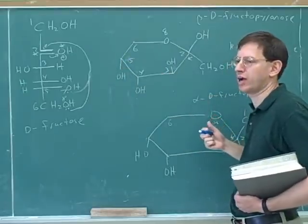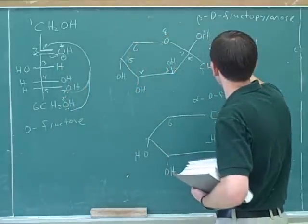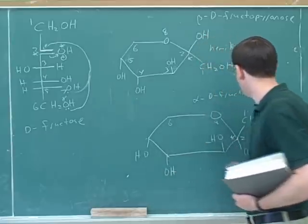You can also see it's hemi because we've only had one alcohol attack. To get the full ketone, we'd have to have two alcohols attack. But we've seen that that's not the standard thing that happens for sugars. We usually only get to the hemi form.